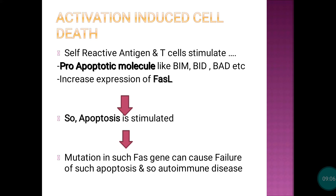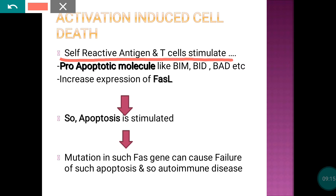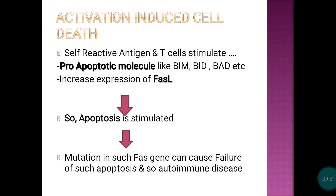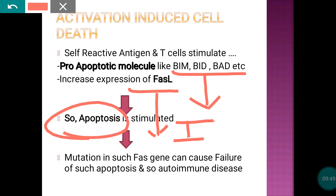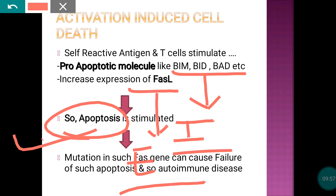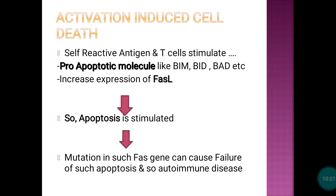The third mechanism is activation-induced cell death. When self-reactive T lymphocytes encounter self-antigens, two important structures are stimulated: Fas ligand and pro-apoptotic molecules — particularly Bim, Bad, Bid, Noxa, and Puma. These activate apoptosis through two pathways: Bim/Bad/Bid trigger the intrinsic pathway, and Fas ligand triggers the extrinsic pathway, leading to removal of self-reactive lymphocytes.